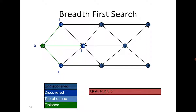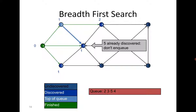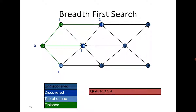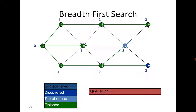Now I go to vertex 2. From 2 I can go to 4, because 5 has already been visited. Then after 2 it is 3; from 3 I can go to 6. Now for vertex 5, its only neighbor is 6 which has already been covered, so I move to 4. From 4 I can go to 8. Then I go to 6; from 6 I can go to 7 and 9, so 7 and 9 are added to the queue. After vertex 6, for vertex 7 all neighbors are already covered, and for vertex 9 all neighbors are already covered. This gives us the required spanning tree.